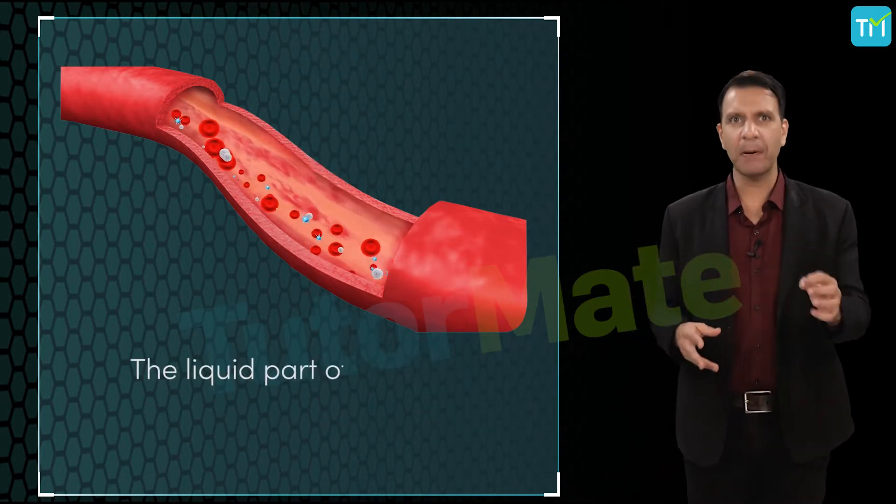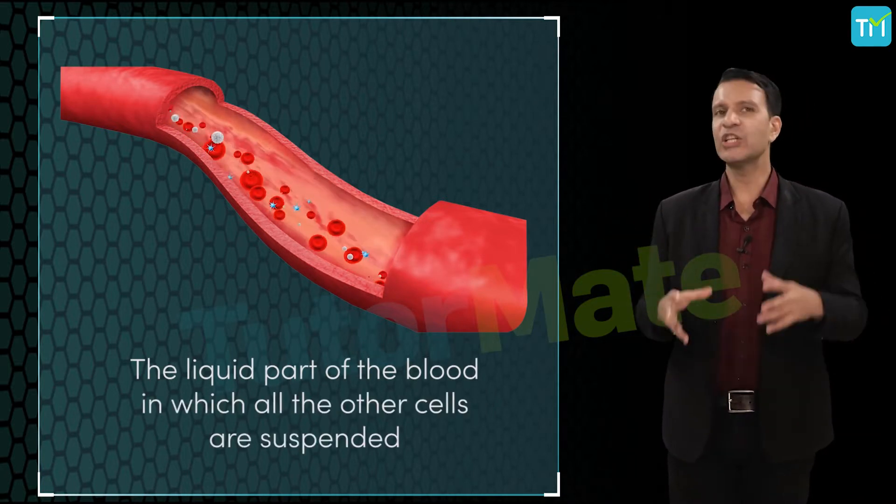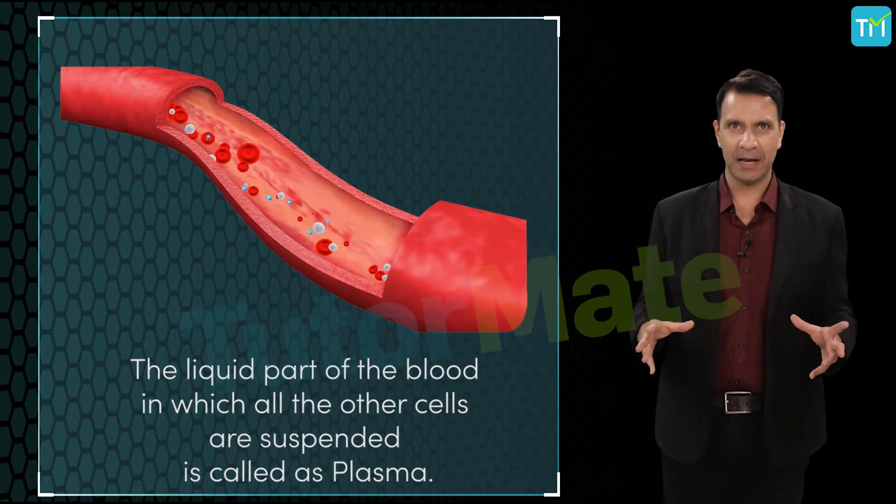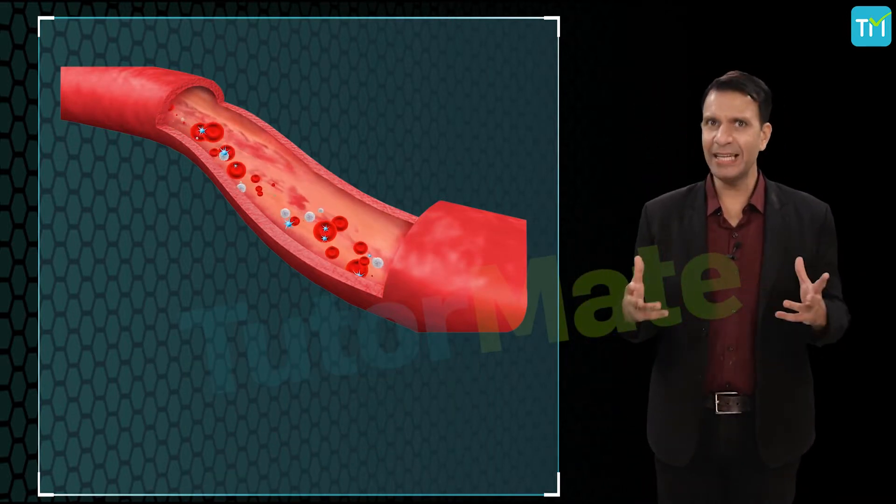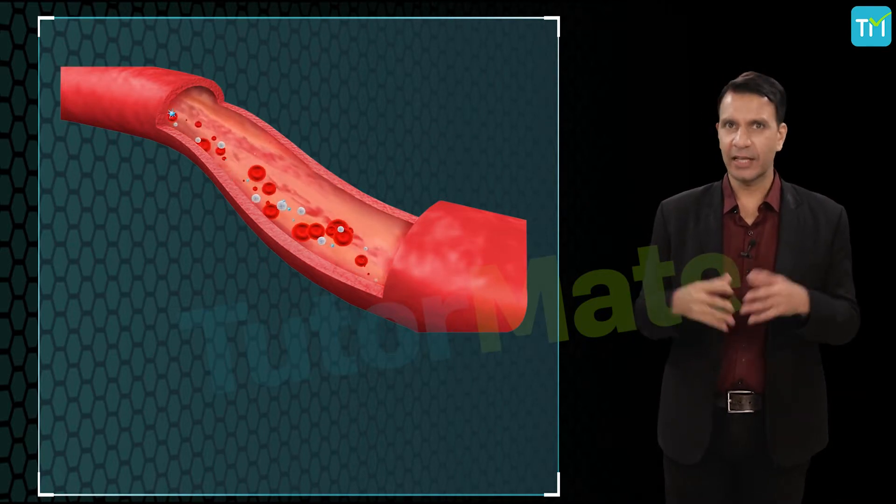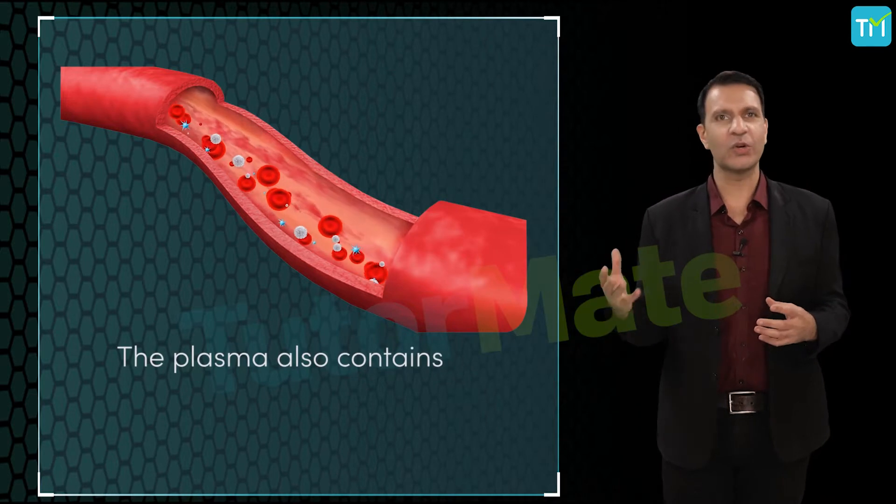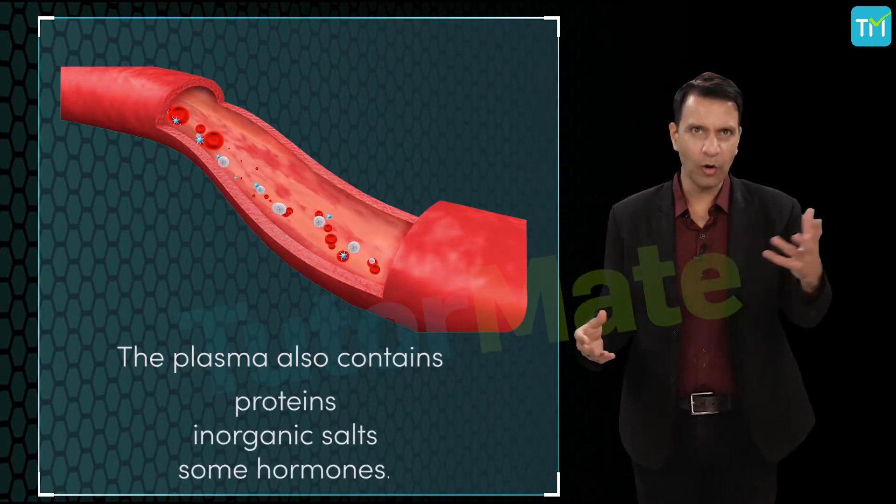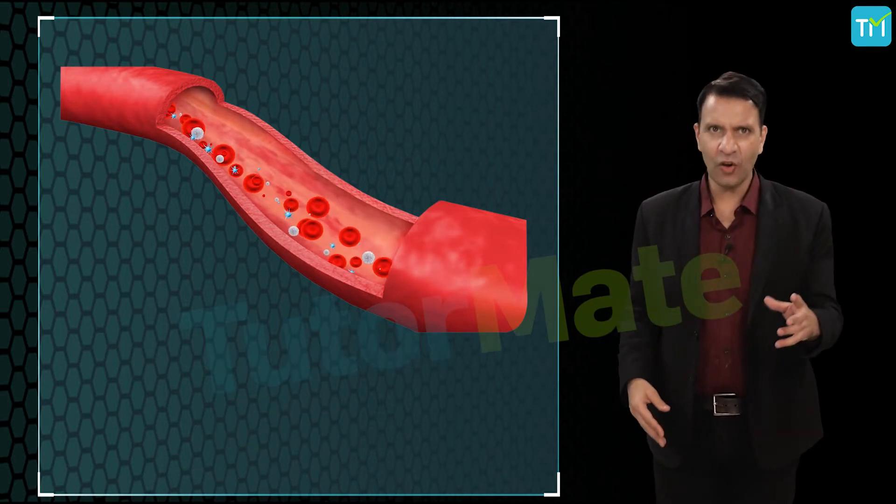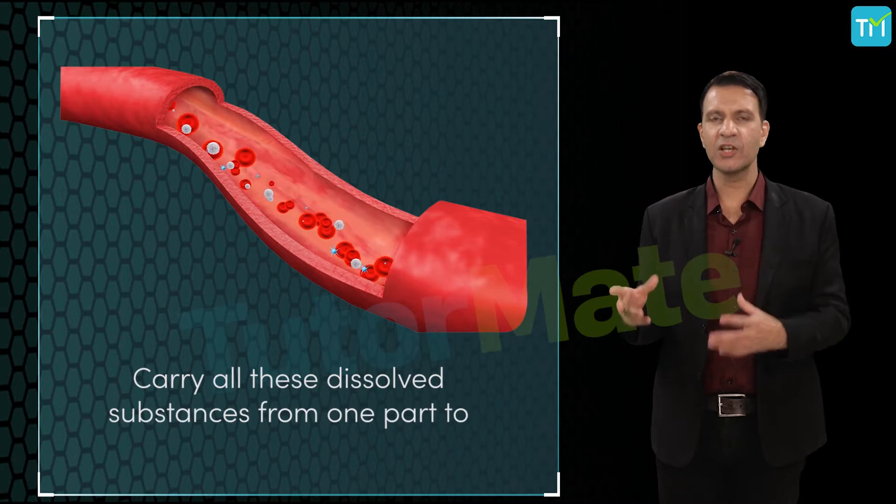Now the liquid part of the blood in which all the other cells are suspended is called plasma. Actually it's a colorless liquid mainly consisting of water. Other than water as its major constituent, the plasma also contains proteins, inorganic salts, and some hormones. The function of the plasma is to carry all the dissolved substances from one part to the other part in the body.